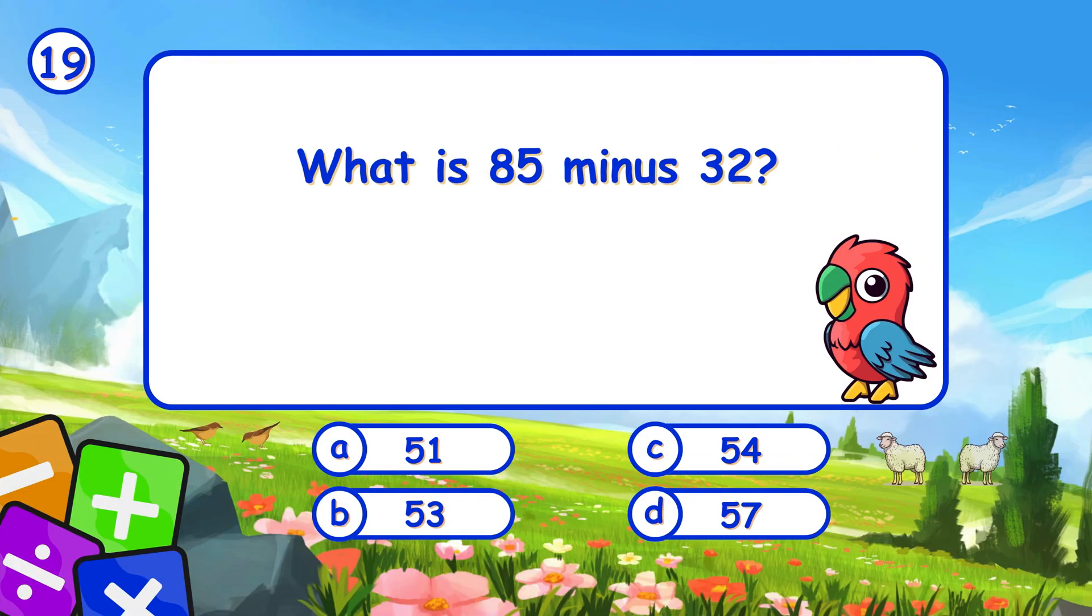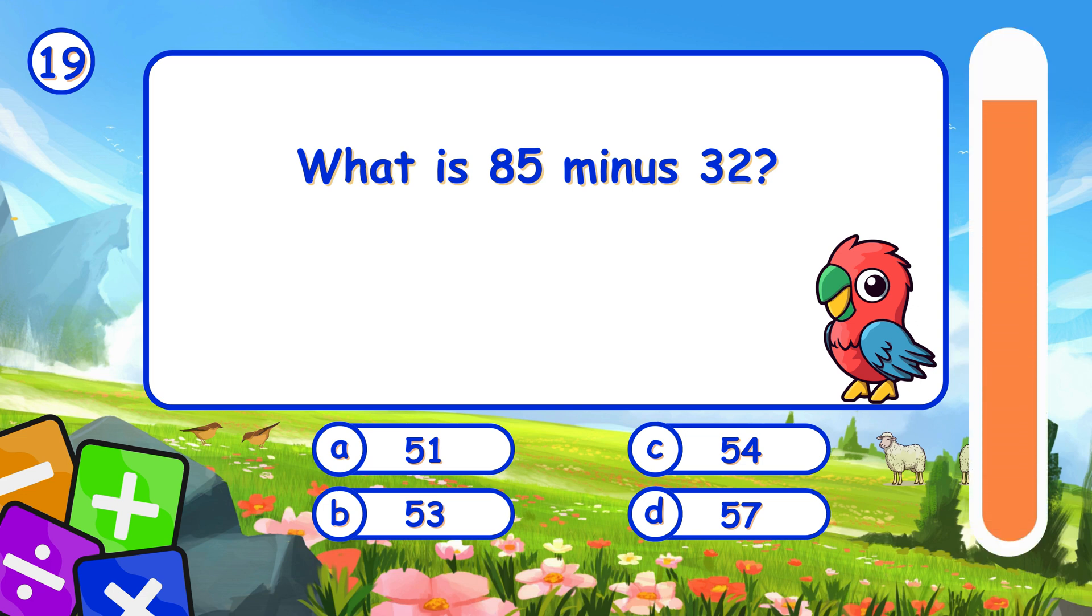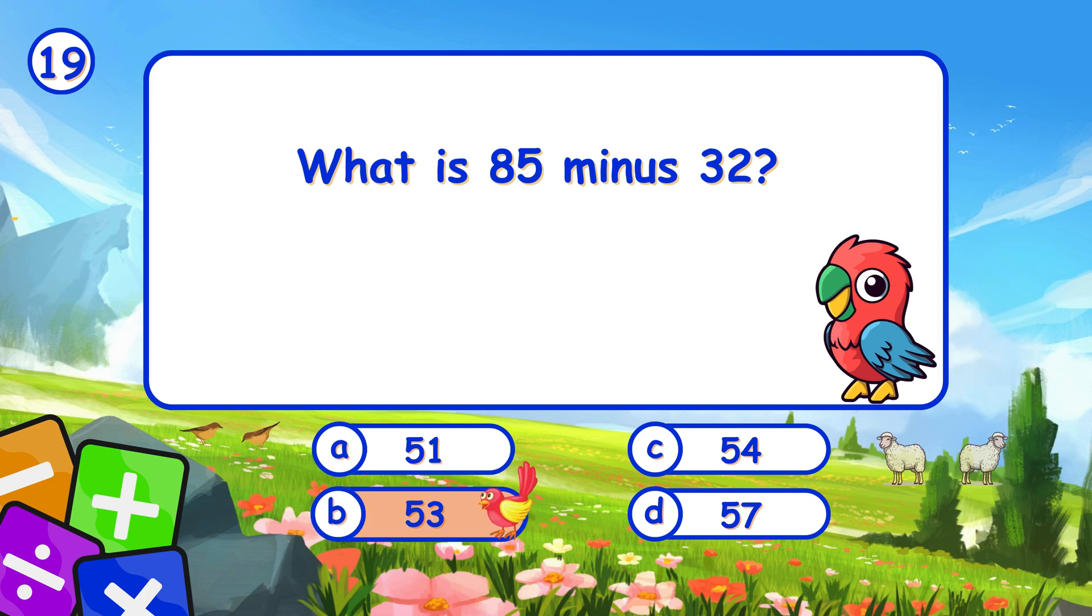What is 85 minus 32? It's B, 53. Subtracting 32 from 85 leaves 53.